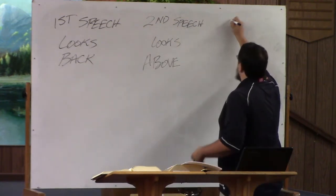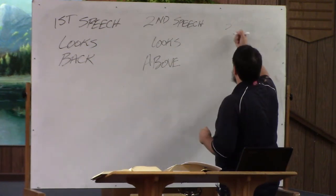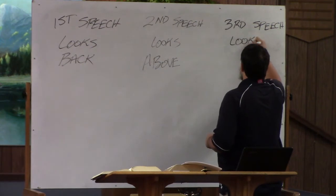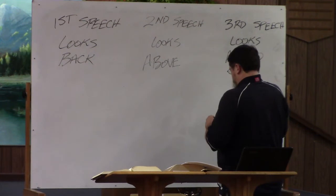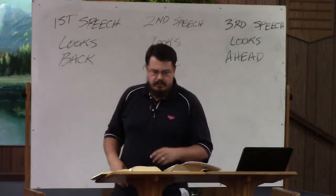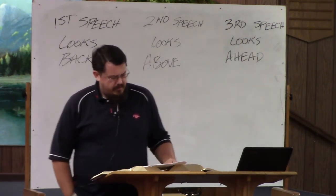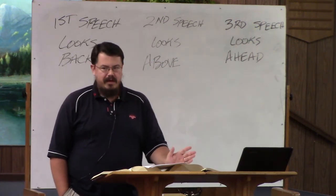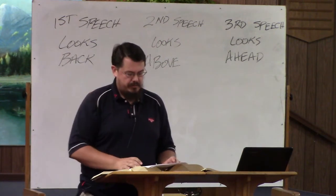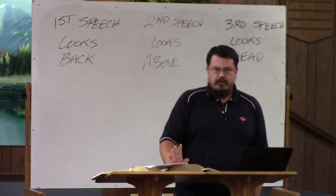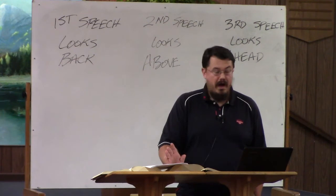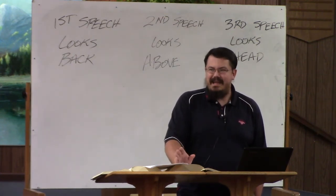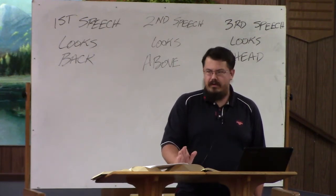The third discourse looks ahead. The book ends with a ceremony where part of the congregation gets up on Mount Gerizim and part on Mount Ebal — two mountains close to each other. Moses pronounces blessings and curses for either obeying or disobeying the words of the law. All through these discourses, you're going to see Moses pleading with Israel to obey the words of the law, obey the covenant.